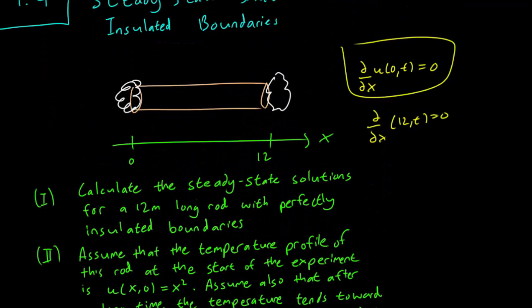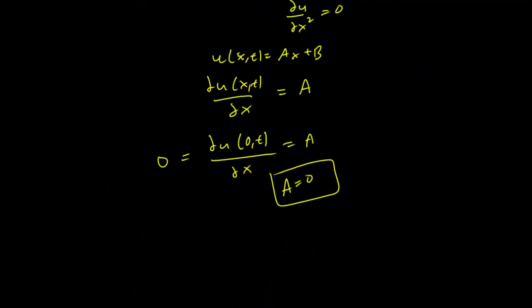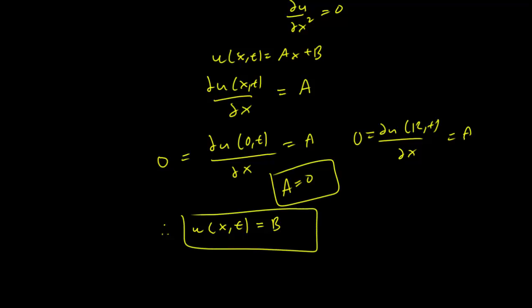Now the second boundary condition doesn't give us any new information. If we plug that in, we still get 0 equals partial u of 12,t partial x equals a, so again a equals 0. So since we have no restrictions on b, we conclude that our steady state solution must be u of x,t equals b. And this is our steady state solution, which is a constant.